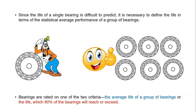Similar to how we take statistical averages in experiments, when we want to predict the life of a ball bearing we consider a number of groups of bearings and take the group's statistical average performance as the life of the bearing. Bearings are rated on one of two criteria. The first criterion is the average life of a group of bearings. The second criterion is the life which 90% of the bearings in the group will reach or exceed — meaning 90% of the bearings complete that number of revolutions before failure.